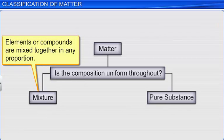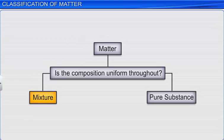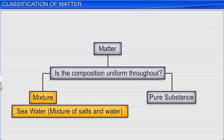When elements or compounds are mixed together in any proportion, it results in the formation of a mixture. Thus, in a mixture, the composition varies. For example, seawater comprises of dissolved salts and water. The seawater consists of varied amounts of dissolved salts and water.